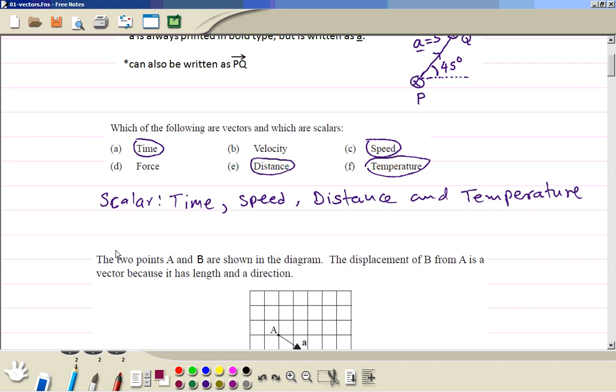Then vectors: velocity is a vector because it has got magnitude and direction. Force, we need to know the magnitude and direction. And we could have another quantity which we haven't got here, which is displacement. So displacement would be a vector quantity.